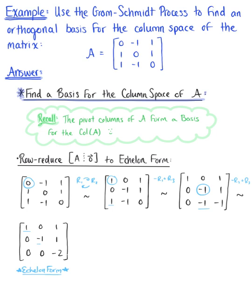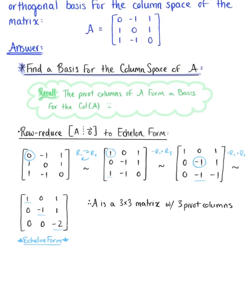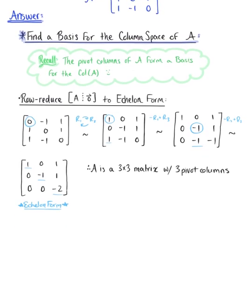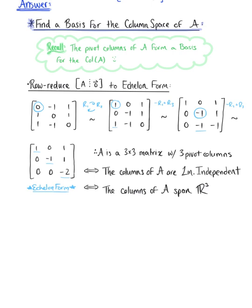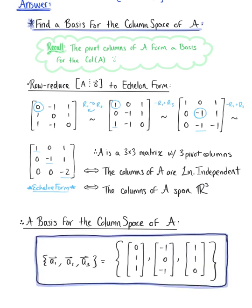We can see there is a pivot position in each of the columns, so all column vectors are pivot columns. Since matrix A is a 3 by 3 matrix with 3 pivot positions, the columns are linearly independent, which is equivalent to saying the columns of matrix A span R3. Therefore, a basis for the column space of matrix A is the set of vectors {(0, 1, 1), (negative 1, 0, negative 1), (1, 1, 0)}.